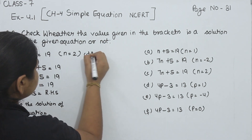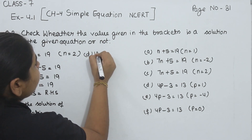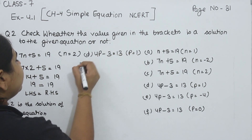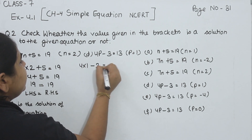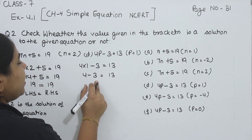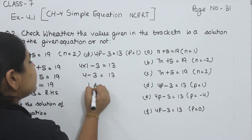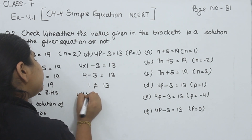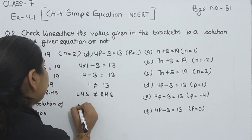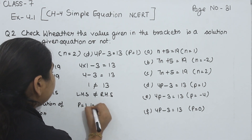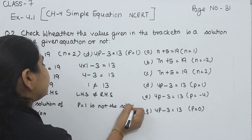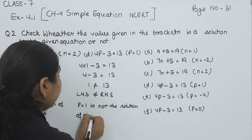Now part D. 4P minus 3 is equal to 13, where P is equal to 1. Now 4 multiplied by 1 minus 3 is equal to 13. 4 ones are 4, so 4 minus 3 is equal to 13. Now 4 minus 3 is 1, and 1 is not equal to 13. So left hand side is not equal to right hand side. P is equal to 1 is not the solution of the given equation.